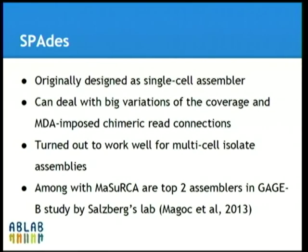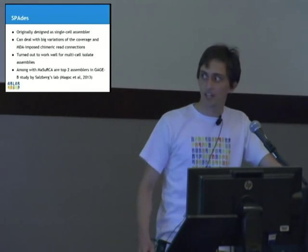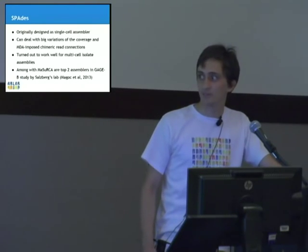Of course, when we published our papers, we used benchmarks and proved that we have the best results, as everybody does. But there was a separate study called GAGE-B. They benchmarked a lot of different assemblers on bacterial datasets, and they ranked SPADES and Velvet as the two best assemblers. We hope that study was independent — at least we did not pay them.